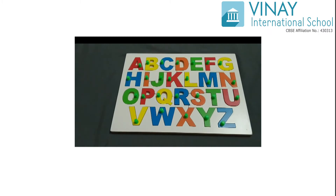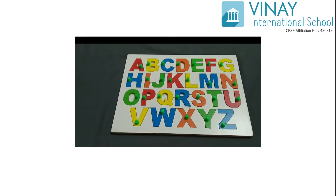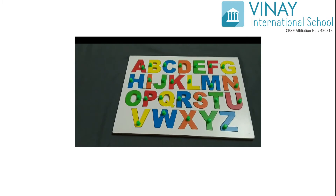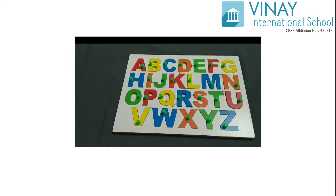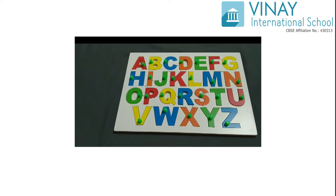सबसे पहले हमें ये सीखना पड़ेगा कि English Alphabets में total कितने letters होते हैं। There are 26 letters in an English Alphabet, that is from A to Z। अब इन 26 letters में से हम Vowels को अलग करेंगे और Consonants को अलग करेंगे।